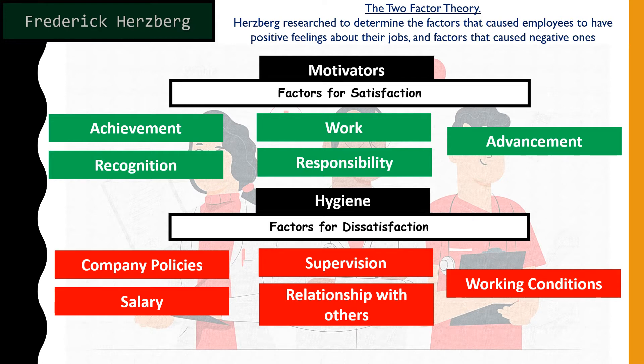Working conditions — the office environment, health and safety procedures, and security the company provides — also evokes feelings of dissatisfaction. Coming back to both together: the five motivators help create positive feelings, while the five hygiene factors cause people to be unhappy. Herzberg's theory is about feelings — how employees would feel if certain things were in place.